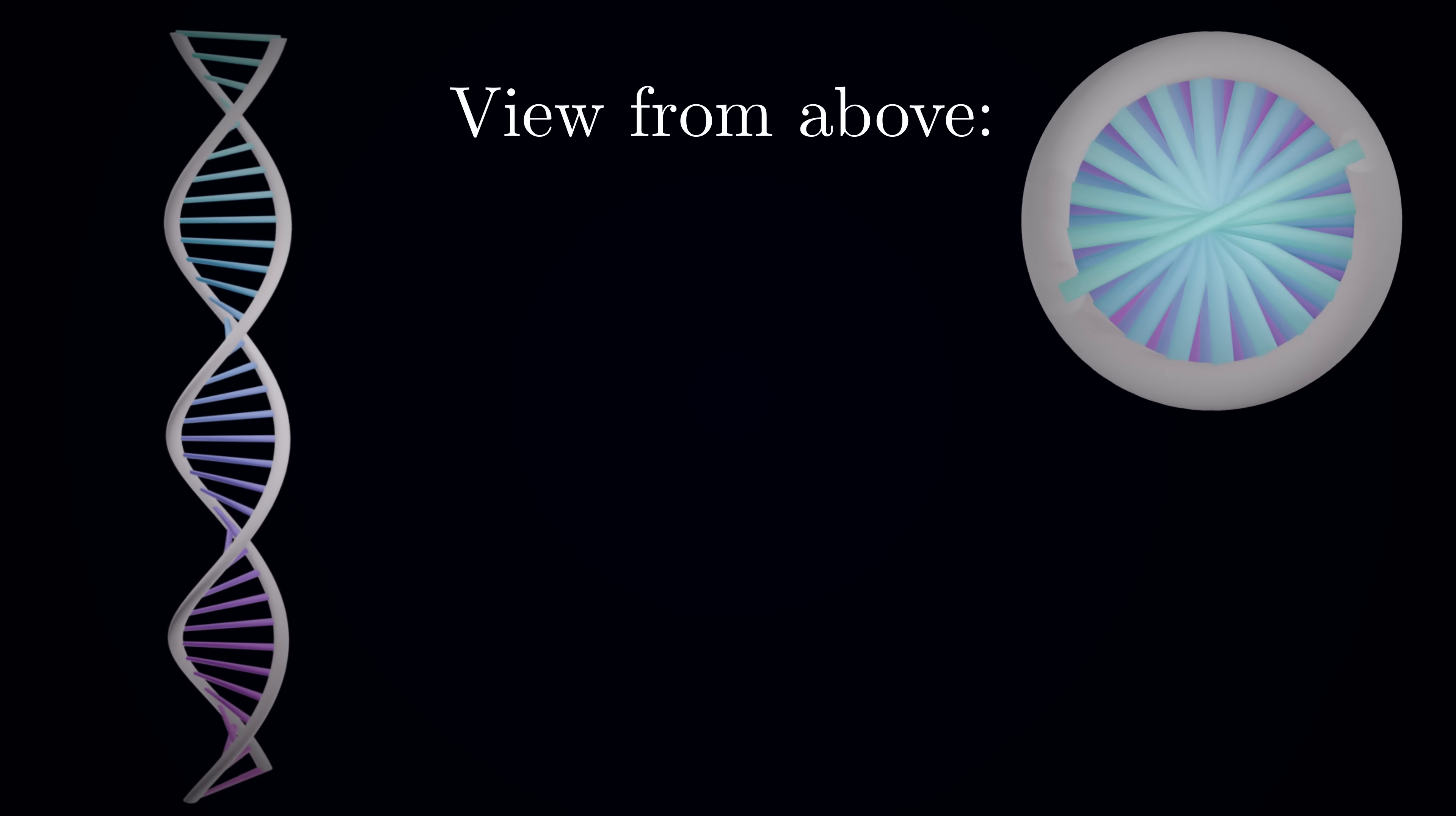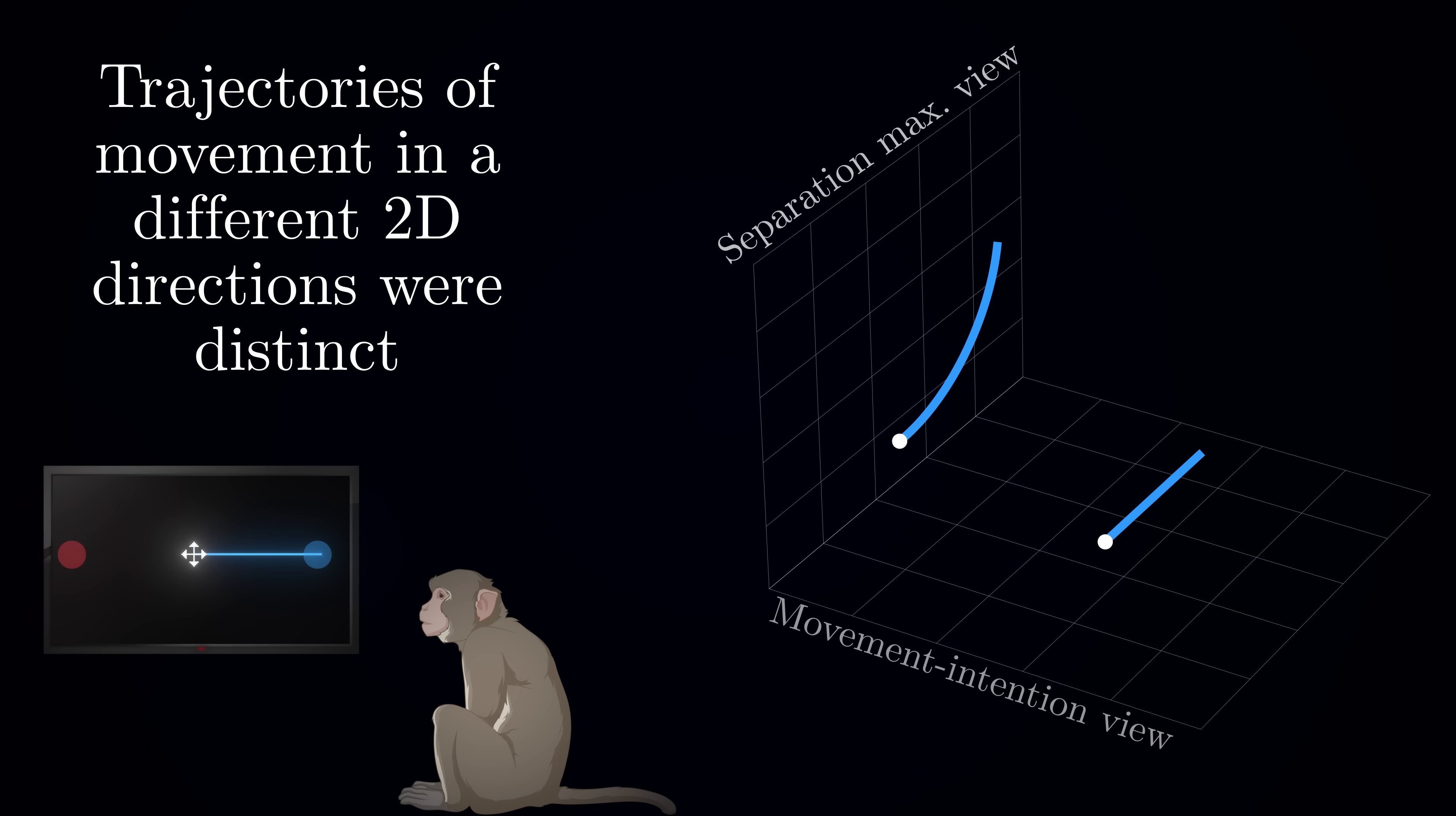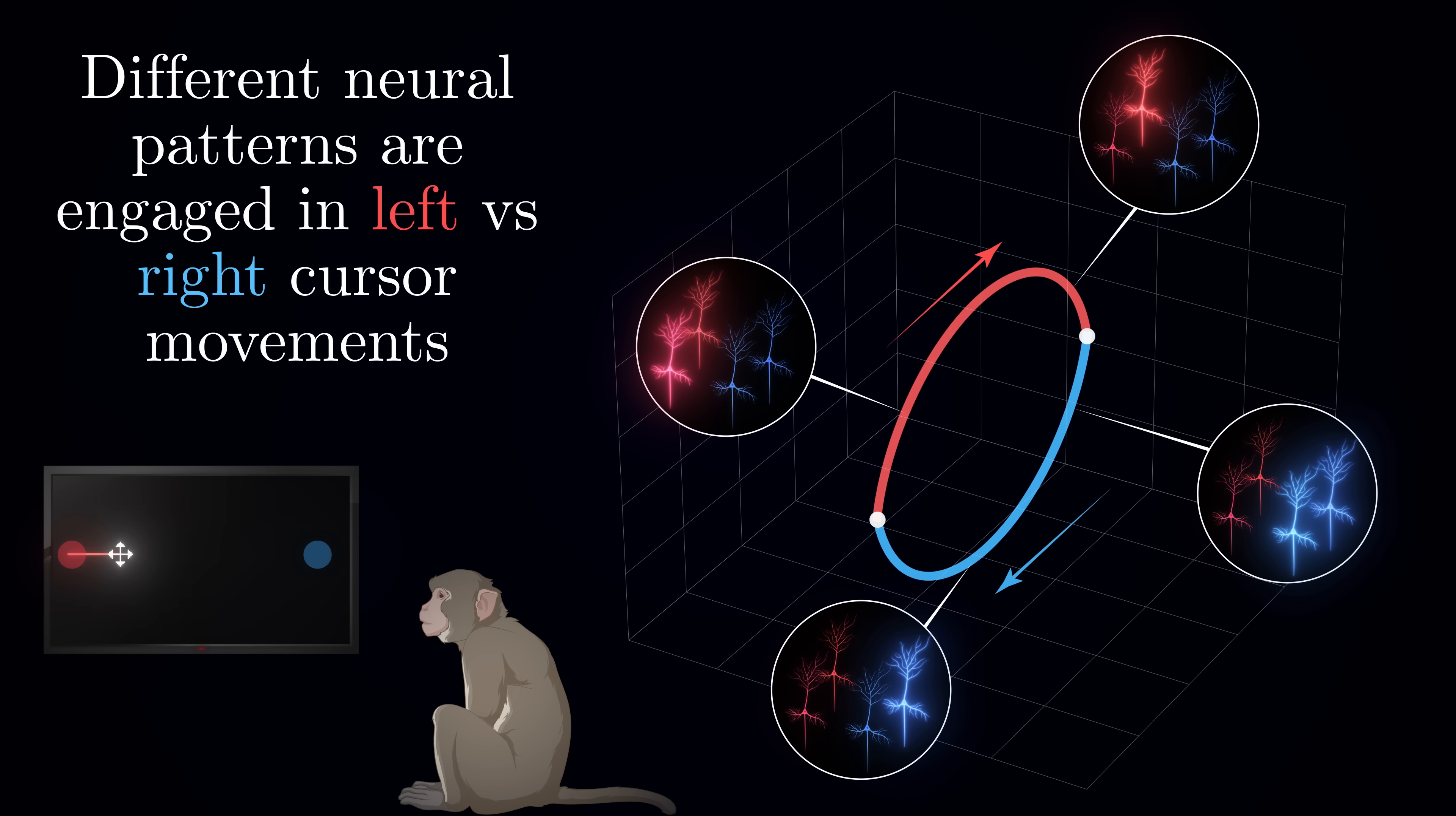However, remember that we're only seeing one particular two-dimensional view of the full 90-dimensional activity, which doesn't convey the full picture. For example, imagine looking at a DNA double helix from above. It appears as a simple circle, but when viewed from the side, you see its complex spiral structure. Similarly, looking at the neural activity from a different angle might reveal hidden structure. Indeed, the researchers found another projection, the separation-maximizing view, where the leftward and rightward trajectories appeared completely distinct, curving in different directions. This revealed something profound. These movements were not mirror images of each other at the neural level at all. Instead of the same neural path being traversed in reverse, the brain was using an entirely different set of patterns for leftward versus rightward movements.